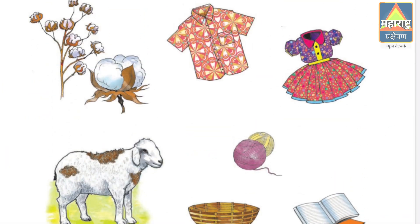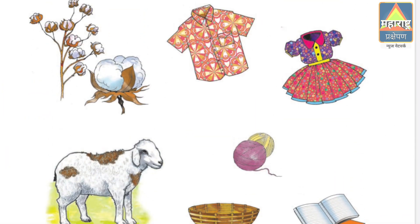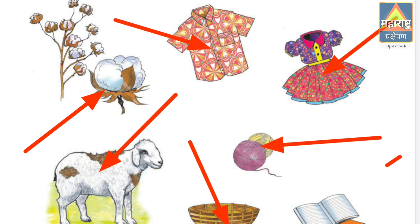Human beings use so many things from the environment. We get cotton, wool, and silk from our environment. We weave clothes from them. We also make things like mats, baskets, and paper from the materials in our environment.